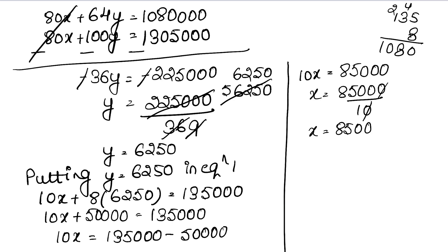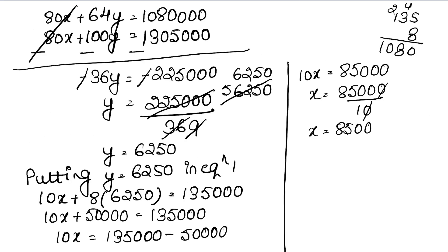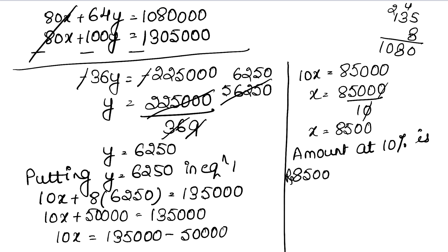So x was the amount invested at 10% interest and y was the amount invested at 8% interest. Therefore: amount at 10% rate is ₹8,500 and amount at 8% rate is ₹6,250. This is the answer.